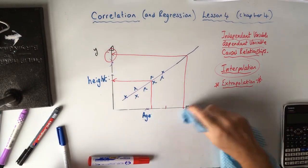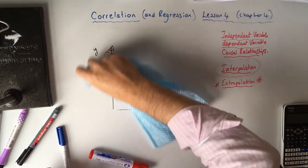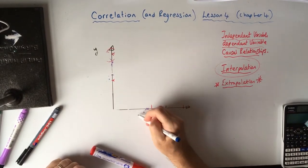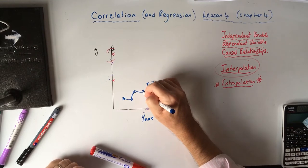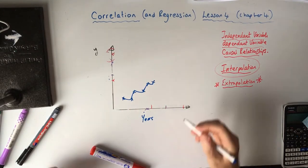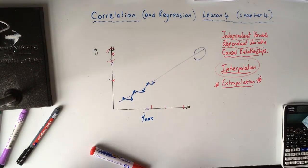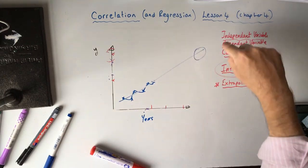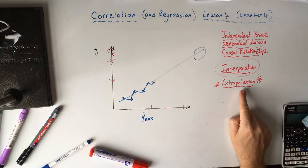Companies do extrapolation when trying to borrow money from a bank — they show their sales figures going up each year and say in 20 years' time we're going to be earning this much. It's very dangerous. Their business isn't necessarily going to keep going up; it might plateau. So extrapolation is dangerous.